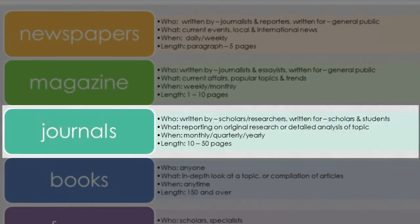Academic journal articles are written by scholars and researchers, and they're written for other scholars and students. They report on original research or detailed analysis of a topic. They are published monthly, quarterly, and sometimes yearly, and the length ranges from ten to fifty pages.